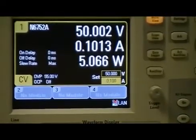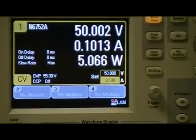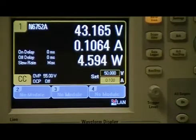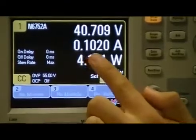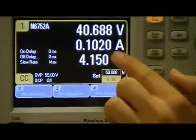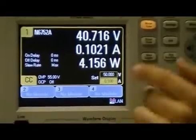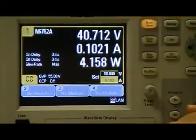Now, to show you it going into CC mode, I will change the resistance to 400, meaning I will raise the current. And as you can see, it went to CC mode. The current is being regulated at a constant current of about 100 milliamps. But now the voltage dropped down to 40 volts.